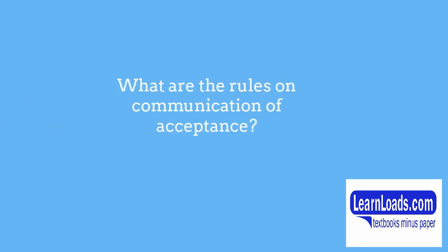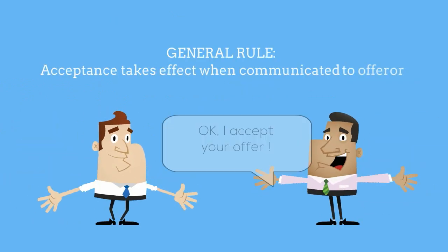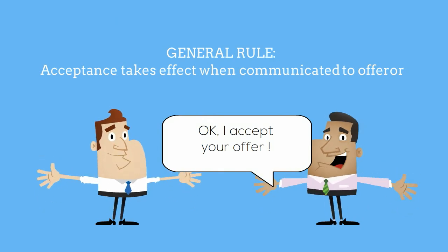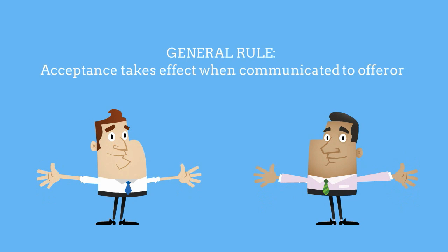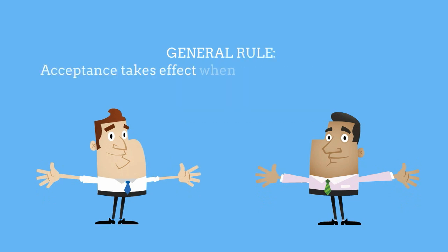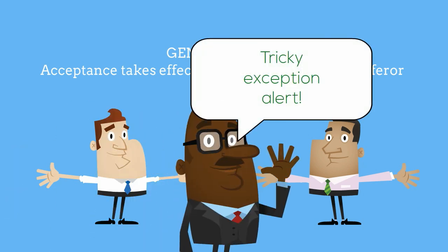What about the rules on communication of acceptance? When an acceptance takes effect is important because it identifies when exactly a contract has been created, as we touched on earlier. The normal rule is that an acceptance takes effect when it's communicated to the offeror, but there are important exceptions to that rule. Exception number one: the postal rule.